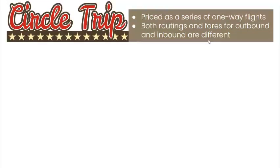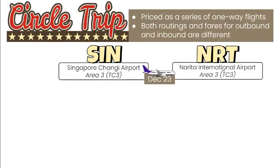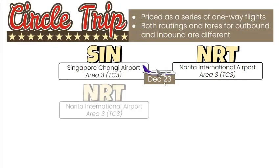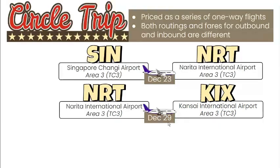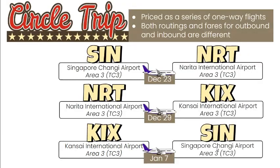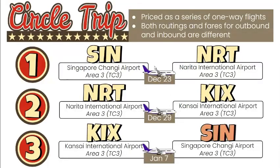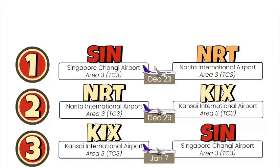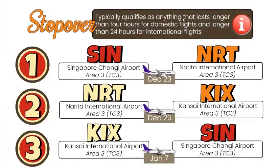Here's another example for the circle trip. The departure is Singapore Changi Airport and the arrival is Narita International Airport on December 23. The passenger stays for a few days in Narita before catching another flight to Kansai International Airport on December 29. Finally, on January 7, he travels back to Singapore Changi Airport. This itinerary includes three separate flights to two different cities before returning to the place of origin. The first stopover is in Narita and the second is in Kansai. A stopover typically qualifies as anything lasting longer than four hours for domestic flights and longer than 24 hours for international flights.